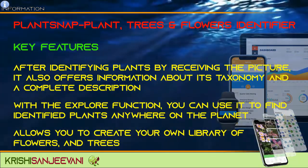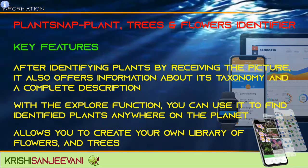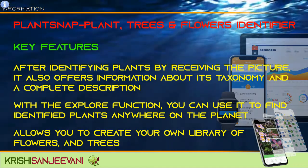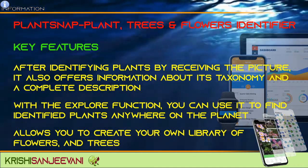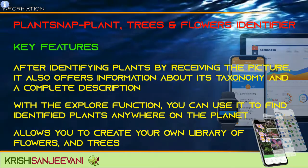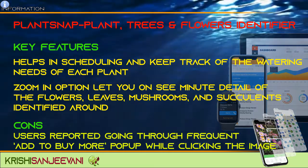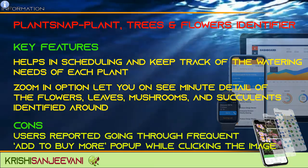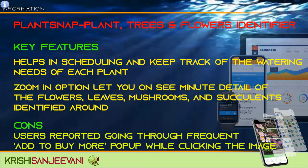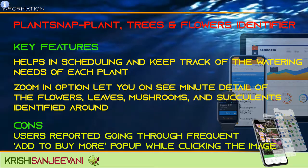Plant Snap — plants, trees, and flowers identifier and plant care. Key features: after identifying plants from a picture, it offers information about taxonomy and a complete description; with the explore function, you can find identified plants anywhere on the planet; allows you to create your own library of flowers and trees; helps in scheduling and tracking watering needs of each plant; zoom-in option lets you see minute details of flowers, leaves, mushrooms, and succulents. Cons: Users reported frequent 'add to buy more' pop-ups while clicking images.